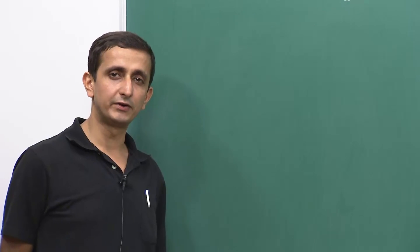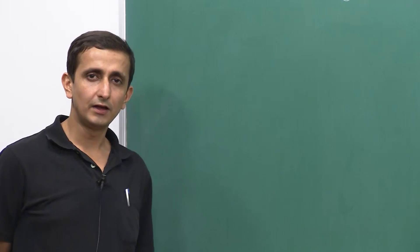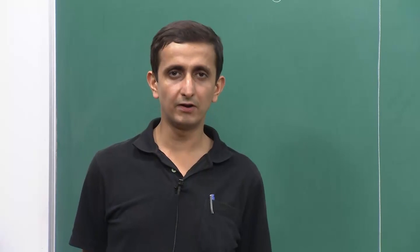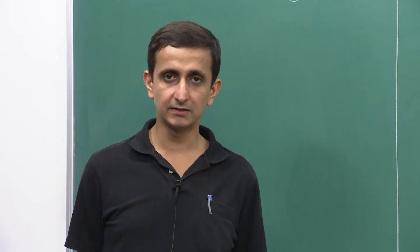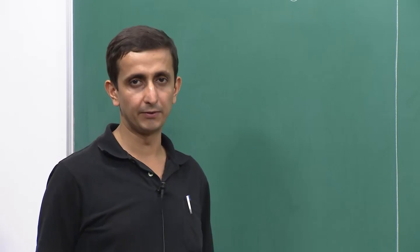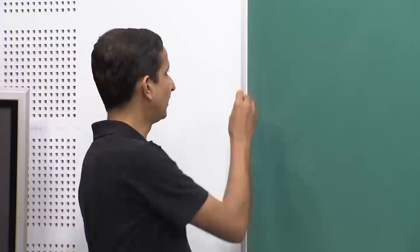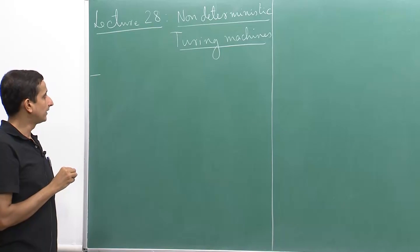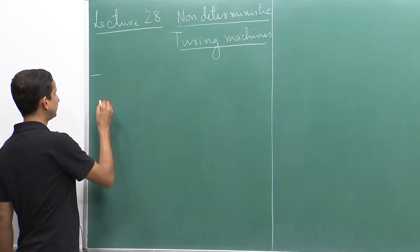Turing machines are a model of computation where we have a finite control, and together with the finite control we have a tape which is unbounded, and any cell of the tape can be accessed at any point during the computation. Let me state some of the classes related to Turing machines.